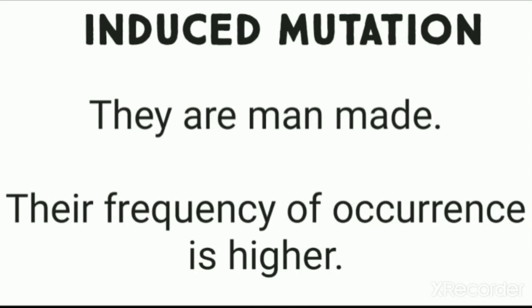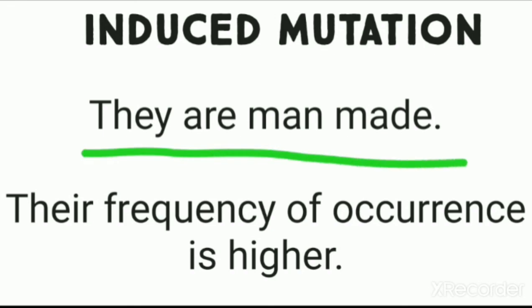For induced mutations — they are man-made, as I mentioned earlier. If something happens artificially, we say humans have induced it, because today X-rays, gamma ray production, and neutrons are all being produced and induced by human beings, and in the same way mutation is also being induced. In induced mutations, their frequency of occurrence is higher compared to spontaneous mutations. Induced mutation is also heavily used in crop production — in hybridization methods for crop improvement, induced mutation is used for high yielding.